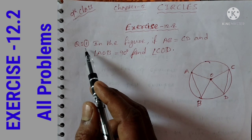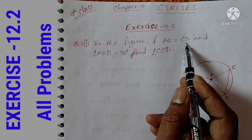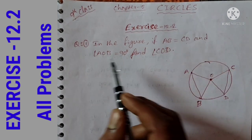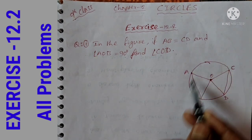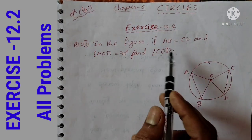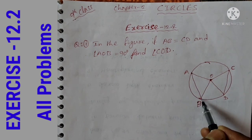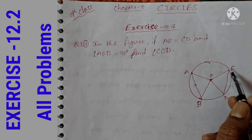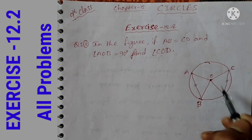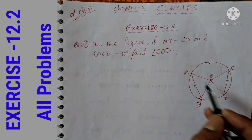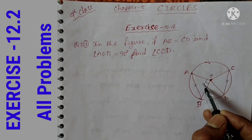The first question is: in the figure, if AB is equal to CD and angle AOB is equal to 90 degrees, find angle COD. AB and CD are chords and they are equal. Angle AOB is 90 degrees.